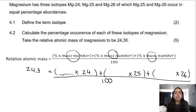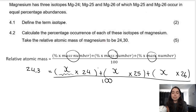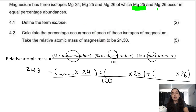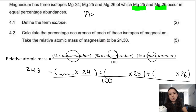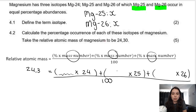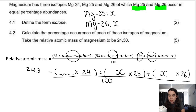For the percentages — you could say it's x, not a bad start, but you can't say x, x, and x for all three, because that would mean all three occur in equal percentage abundances. That's not what the question says. The question says Mg25 and Mg26 occur in equal percentage abundances. So we call Mg25 = x, and since Mg26 has the same abundance, Mg26 is also x.